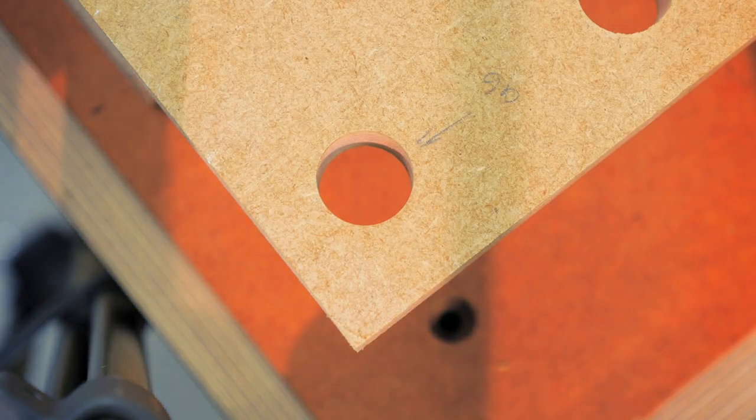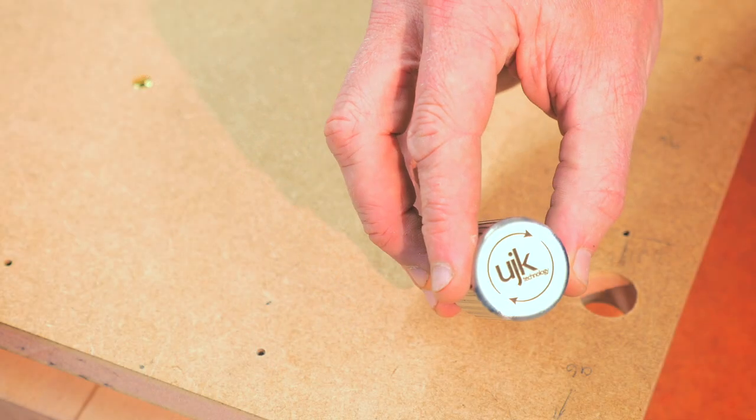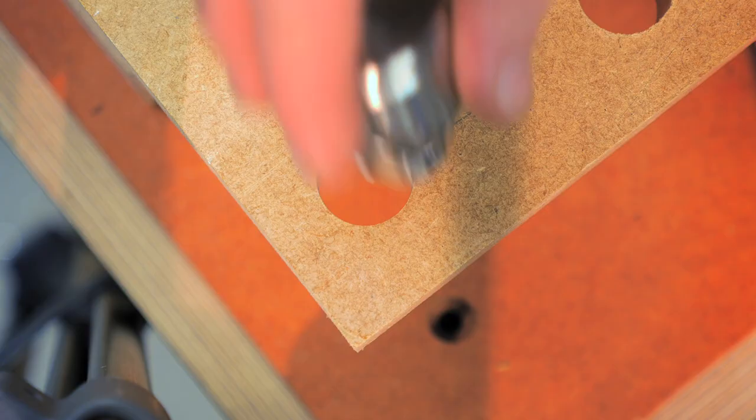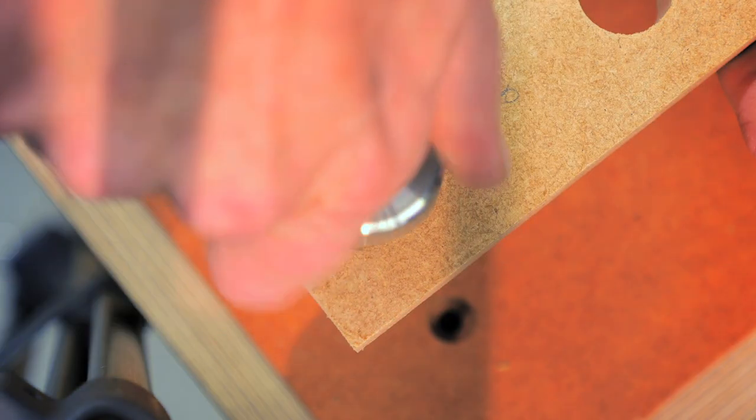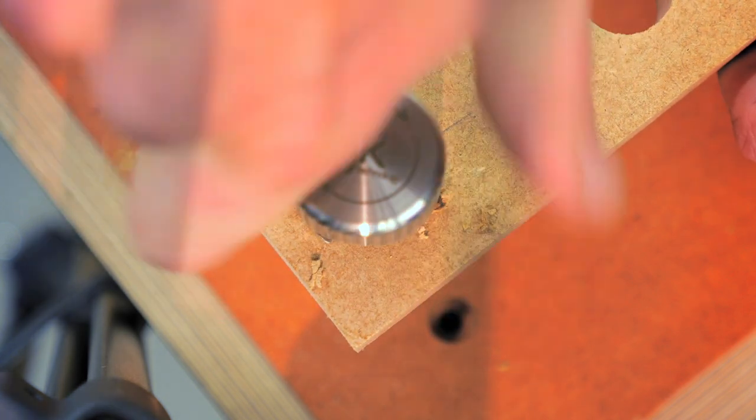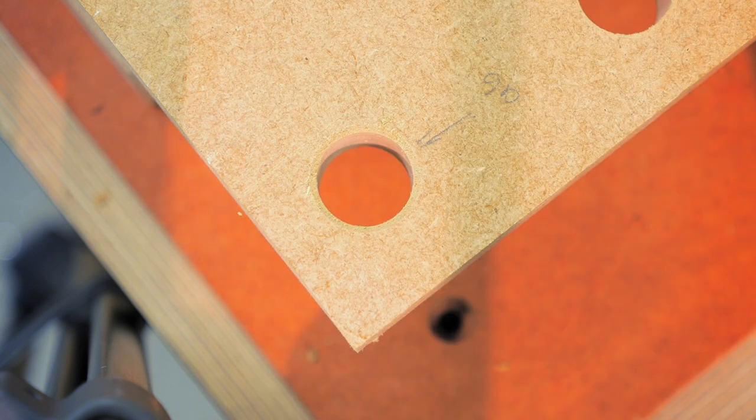To use the chamfer ring, a small chamfer is needed in the hole. If it's MDF, there's the optional UJK Technology Chamfer Cutter. Simply put it in, and with two or three turns, it creates a perfect chamfer for the ring.